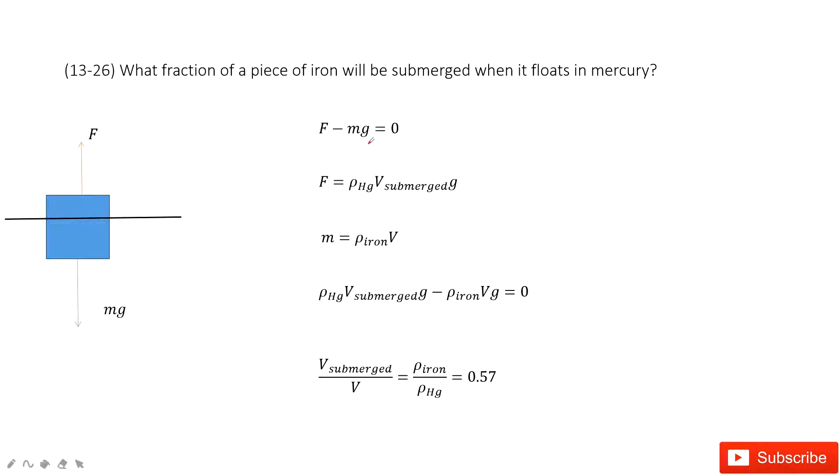This F equals mg. And this F we know is ρgV. What is ρ? This is the density of the liquid mercury. And what is this V? This V is this part.